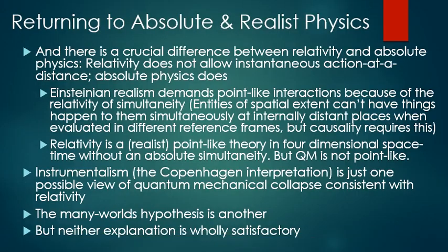And there is a crucial difference between relativity and absolute physics. Relativity does not allow instantaneous action at a distance, while absolute physics does. Einsteinian realism demands point-like interactions because of the relativity of simultaneity. Entities having a spatial extent can't have things happen to them simultaneously at internally distant places, such as their ends, when evaluated in different reference frames. But causality requires this if we assume a reality to quantum mechanics. Relativity is a realist point-like theory in four-dimensional space-time without an absolute simultaneity. But quantum mechanics is not a point-like theory. Instrumentalism, otherwise known as the Copenhagen Interpretation, is just one possible view of quantum mechanical collapse that is consistent with relativity. The many-worlds hypothesis is another. But neither explanation is wholly satisfactory.